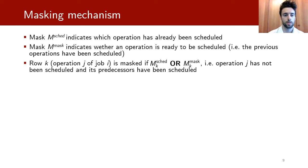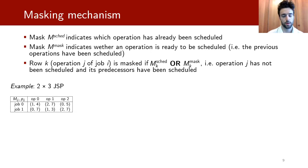The masking mechanism that we use to produce appropriate permutations uses two Boolean matrices, mSched and mMask, which respectively indicate if an operation has been scheduled and if it's ready to be scheduled. We use an example to more clearly explain this method.